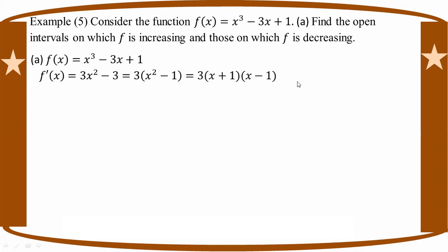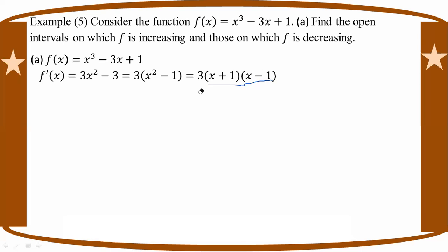To find the open intervals, we need to find the critical points. We set F prime equal to zero: A plus 1 equals 0 and A minus 1 equals 0. So A plus 1 equals 0 gives A equals minus 1, and A minus 1 equals 0 gives A equals 1.